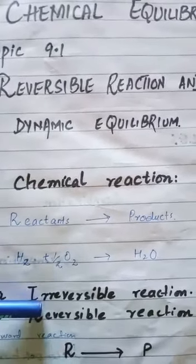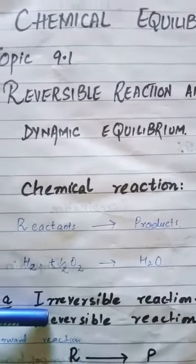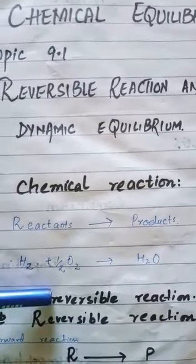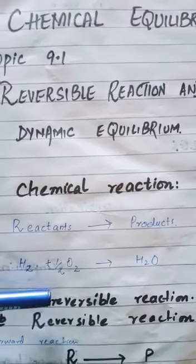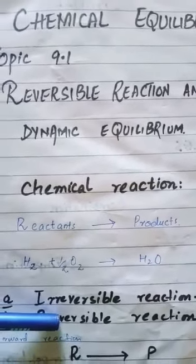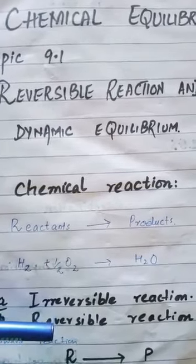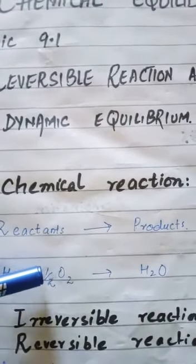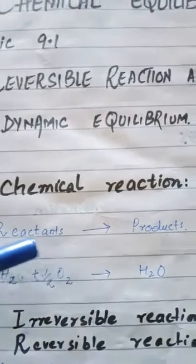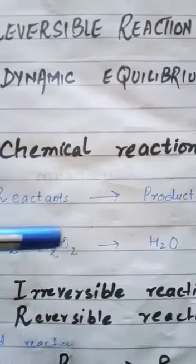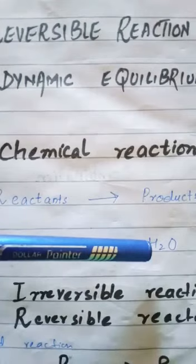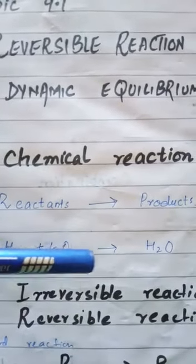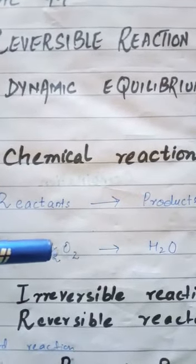A reaction can be irreversible or reversible. As the name indicates, a reversible reaction is one that can be reversed, while an irreversible reaction is one that cannot be reversed. For example, hydrogen and oxygen reacting to give water — this forward reaction can be reversed back, meaning water can be decomposed to give hydrogen and oxygen again. So the product can be decomposed back to give reactants — this is the reversal of a reaction.